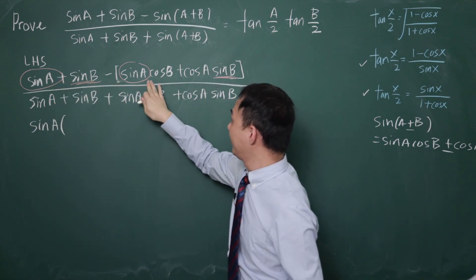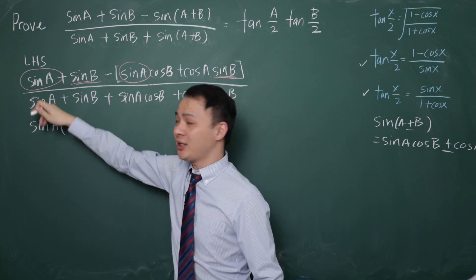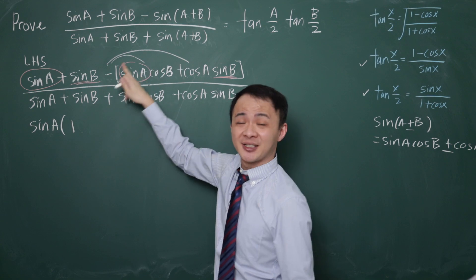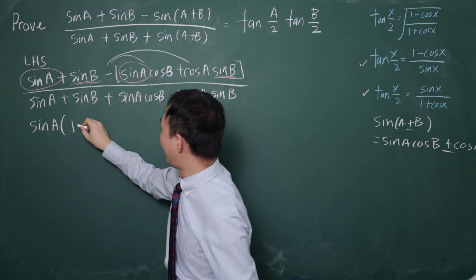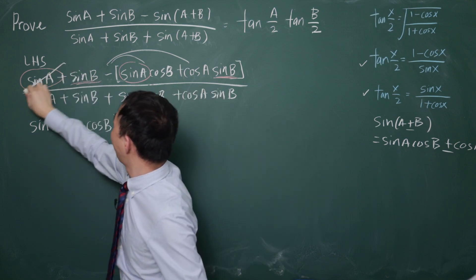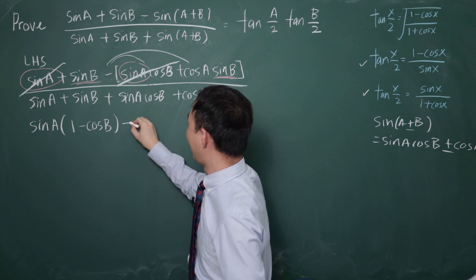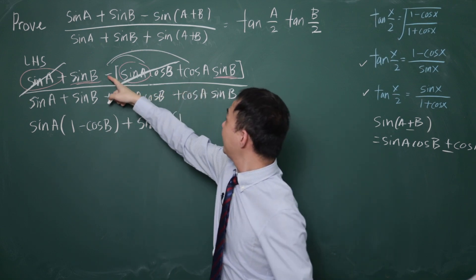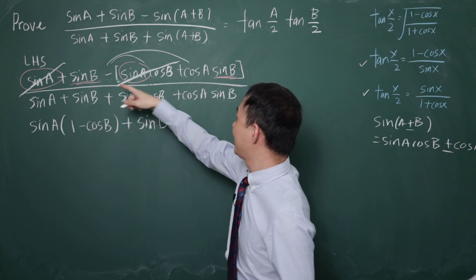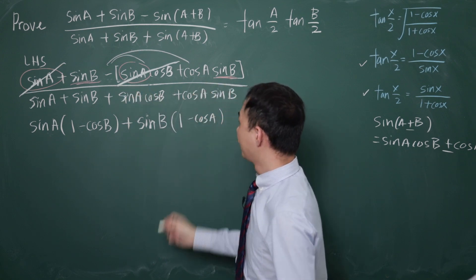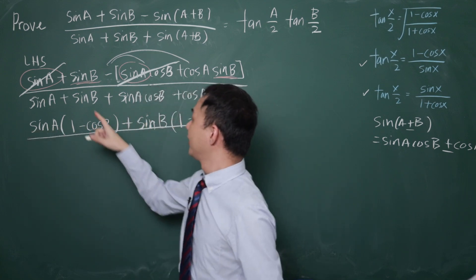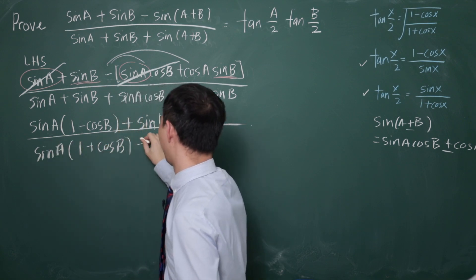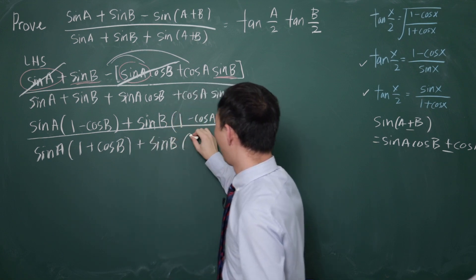If I factorize sine A from the first term, I'm left with 1, and there's a minus sign, so after factorizing sine A I'm left with (1 minus cos B). Then I factorize out sine B from the remaining terms, which leaves (1 minus cos A). I do the same process for the denominator: factorizing out sine A gives (1 plus cos B), and factorizing out sine B gives (1 plus cos A).